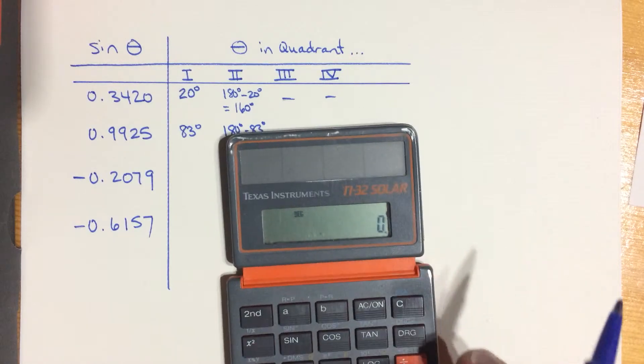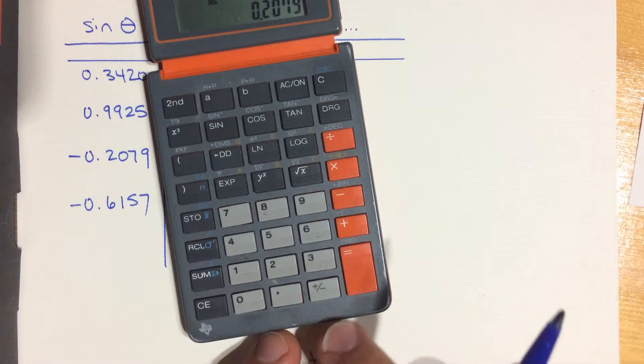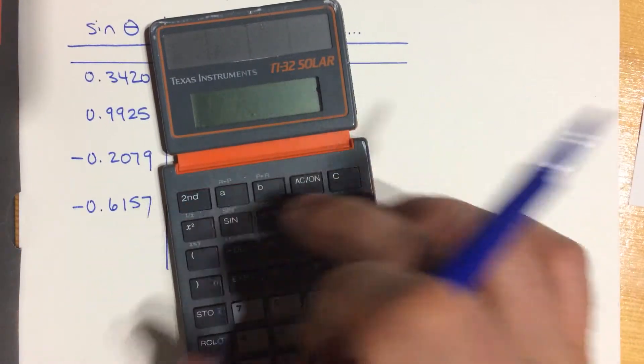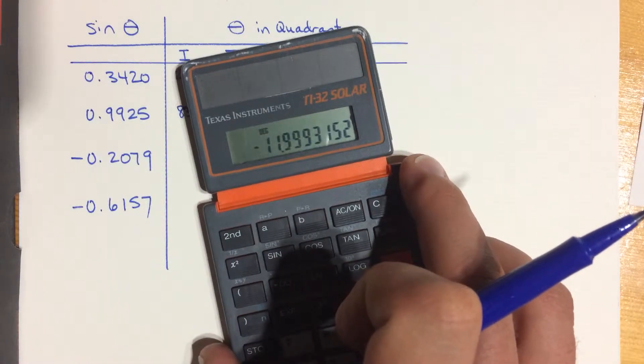Let's try this one here. 0.2079, and then I'm going to hit this plus minus button to make that a negative number. And then I will hit my sine inverse. Ooh, looks like negative 12. Negative 12. What does that mean?